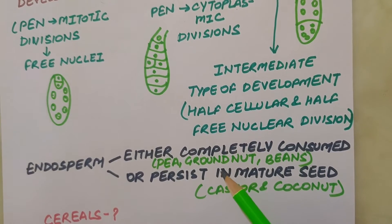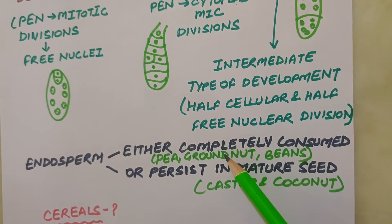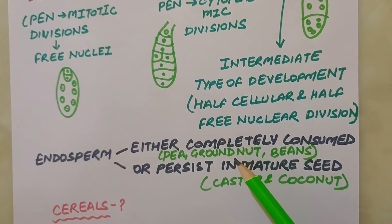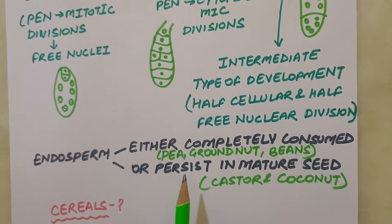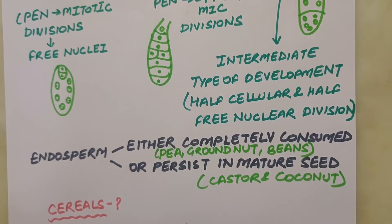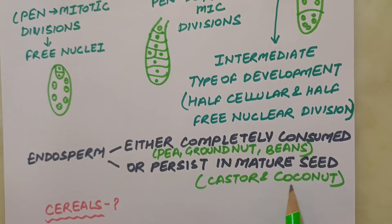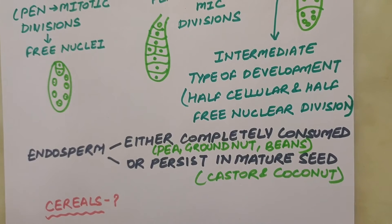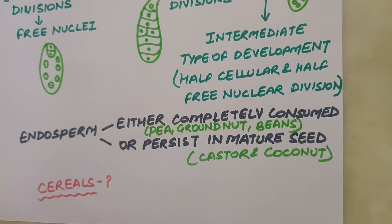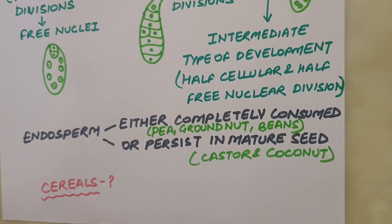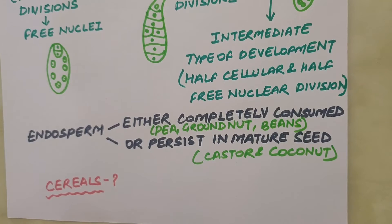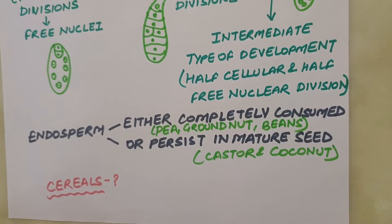In helobial endosperm development, half of the cell develops in cellular mode and the other half undergoes free nuclear division. In groundnut, which belongs to the bean family, the mature seed lacks endosperm as it is completely consumed by the developing embryo before seed maturation. When these seeds germinate, the cotyledons become the source of nutrition. However, in mature seeds of castor and coconut, the endosperm is retained as the storage tissue. In cereals, the aleurone layer, which forms part of the endosperm, stores food and also secretes amylase enzyme for the digestion of stored starch during germination.